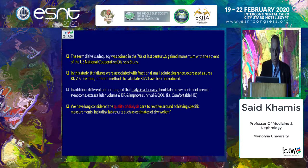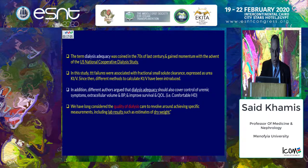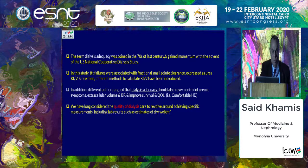The term dialysis adequacy was coined more than 40 years ago, gaining momentum with the U.S. National Cooperative Dialysis Study. In that study, treatment failure was associated with fractional small solute clearance expressed as urea KT/V, and since then different methods to calculate KT/V have been introduced. However, different authors argued that dialysis adequacy should also cover control of uremic symptoms, extracellular volume, blood pressure, improved survival, and quality of life.